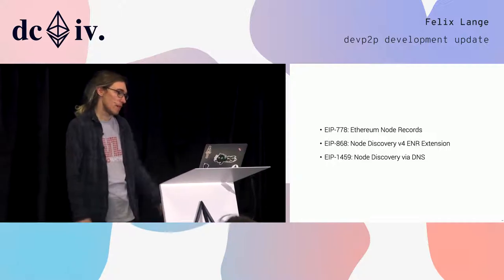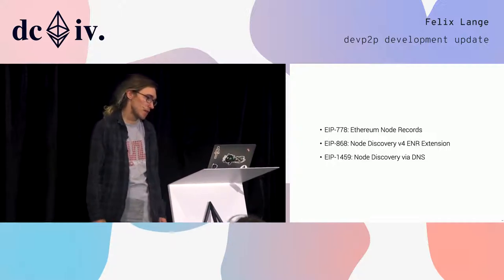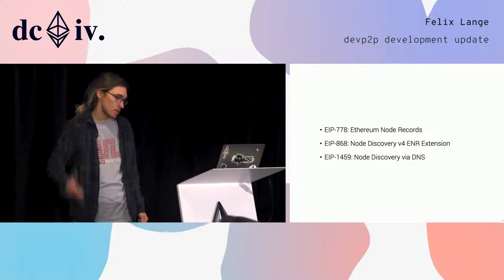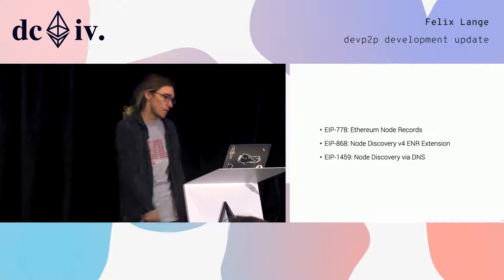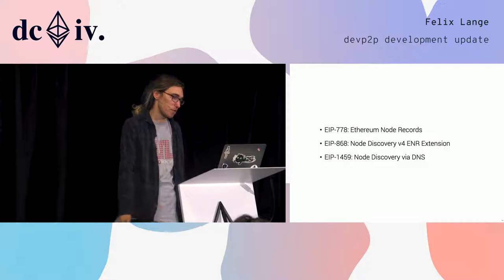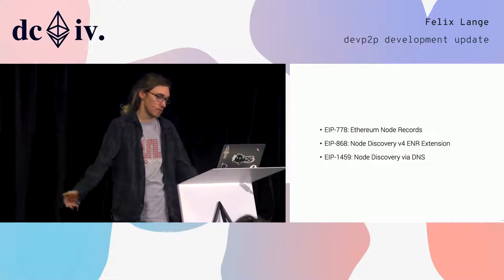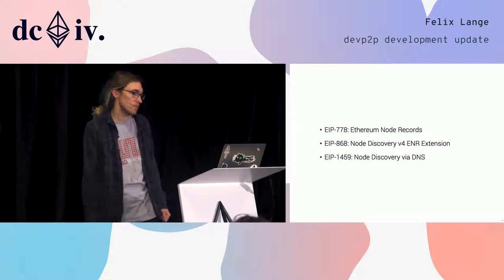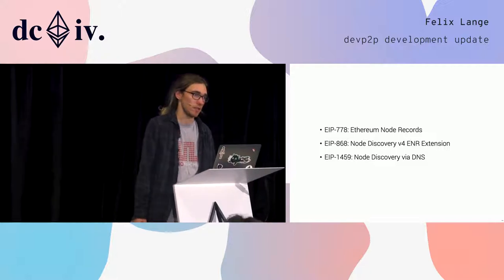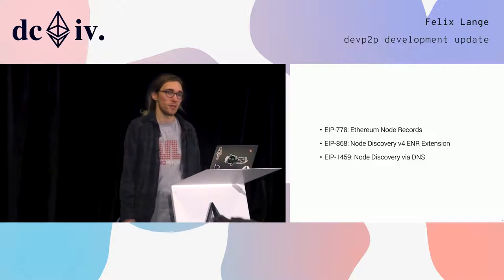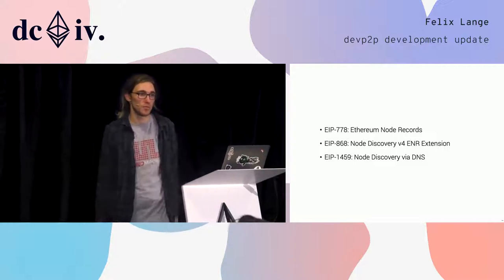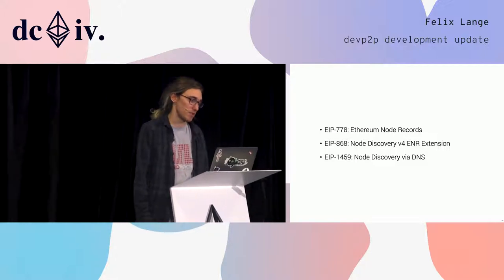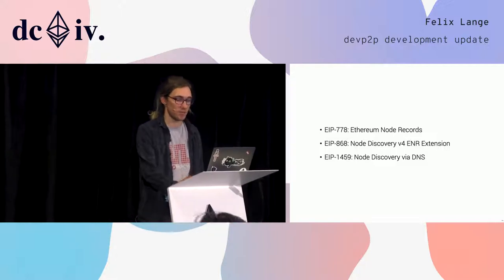Ethereum Node Records is implemented in Go, Python, and JavaScript so far. The EIP868 extension is implemented in Go but isn't merged into the master branch. Node discovery via DNS is implemented in Go and Python, but the deployer tool that moves it to a DNS provider isn't really done yet.